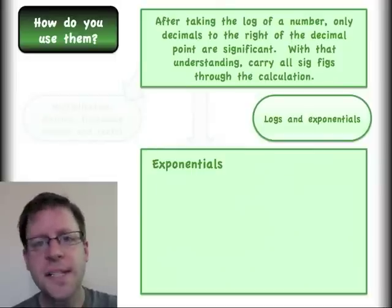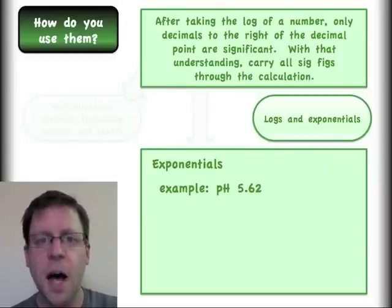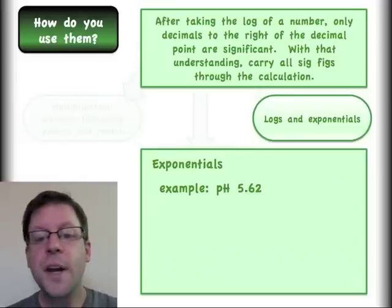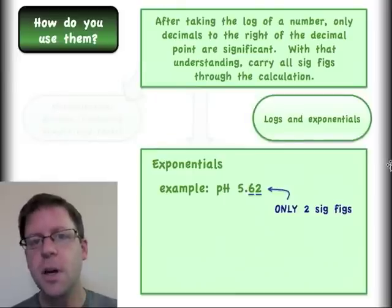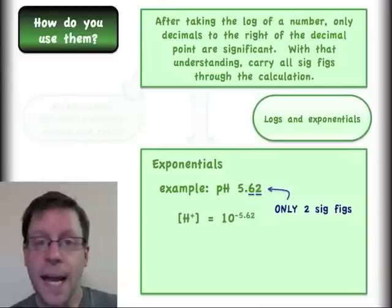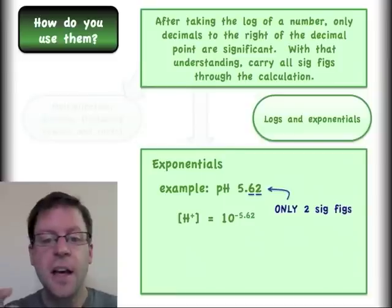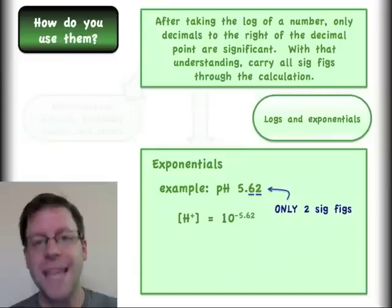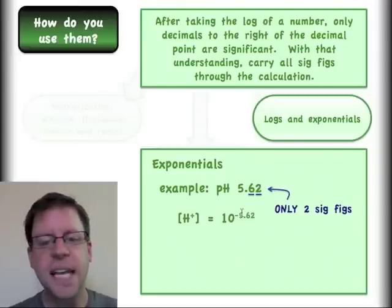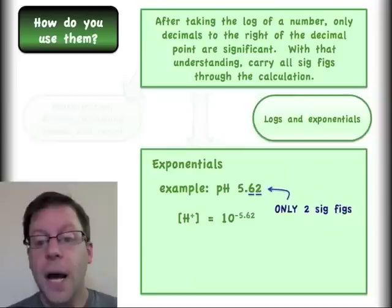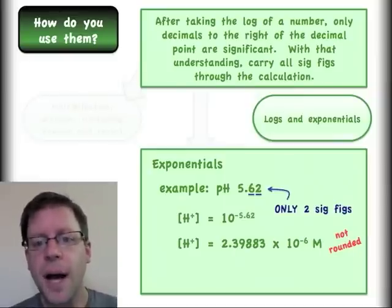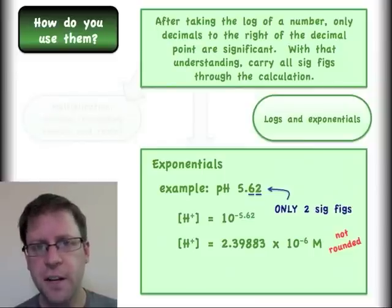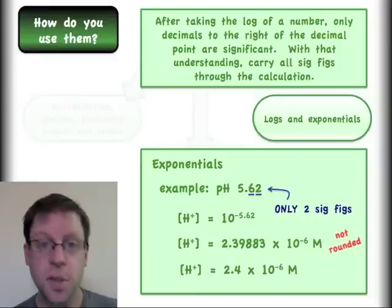Exponentials have to follow the same rules except go in reverse. I'm going to use the example of pH since that's a common example for this. I'll say pH 5.62 only has two significant figures. We're doing the reverse here, so only the ones after to the right of the decimal are significant. So if I did my anti-log here, if I did my exponential and went 10 to the negative 5.62 so that I could convert this pH into a concentration of my H+. When I do this calculation here, I would get this full number here which is not rounded. But as I stated before in blue, I only started with two significant figures so I would round my end concentration here down to two significant figures.